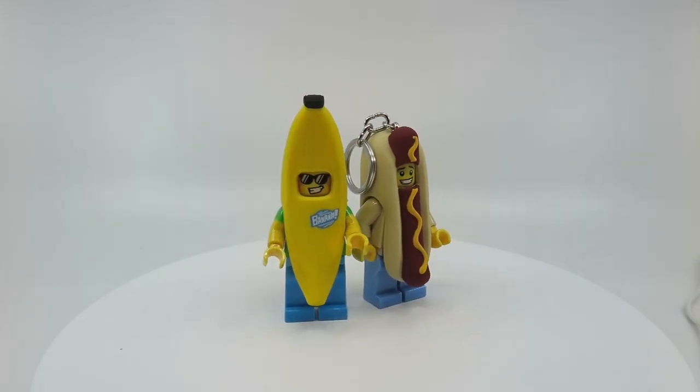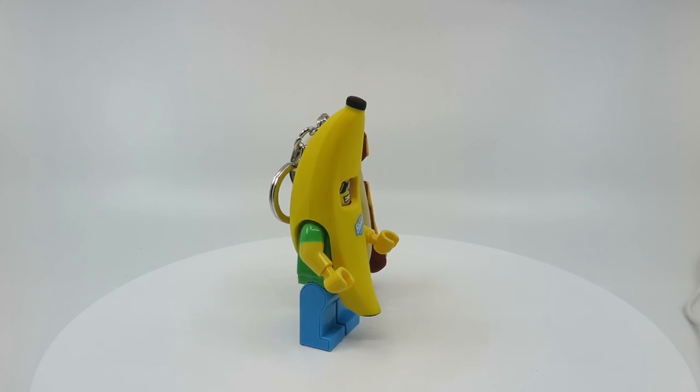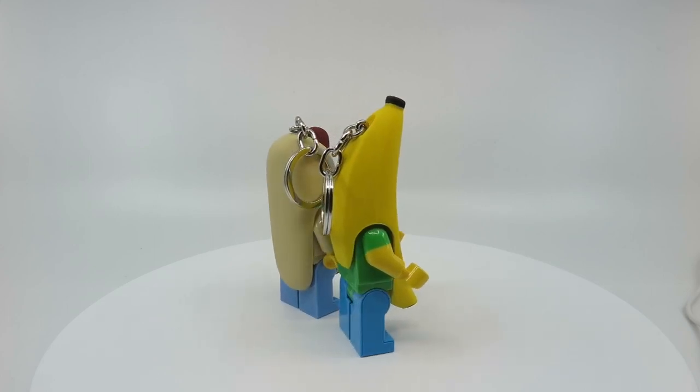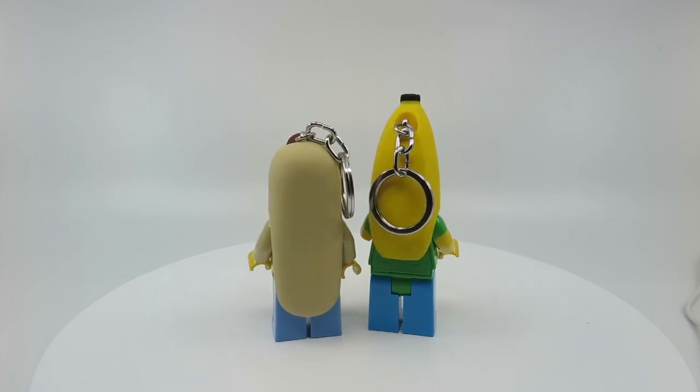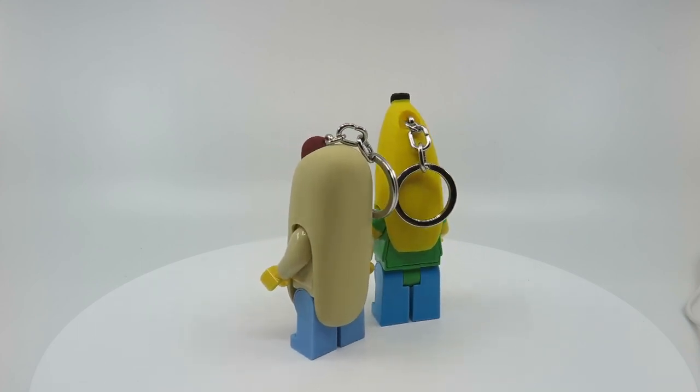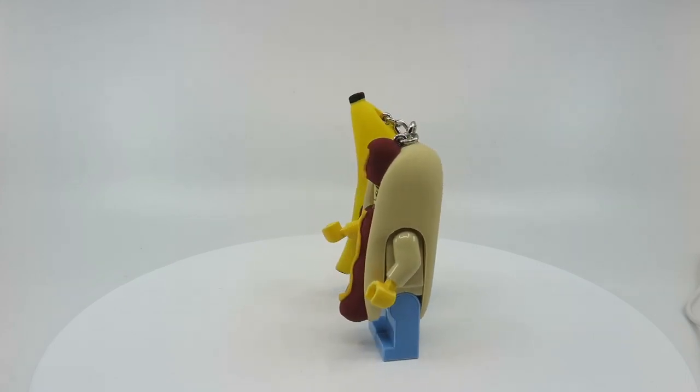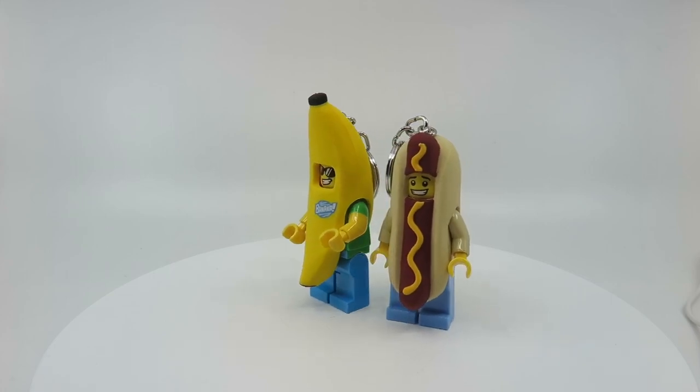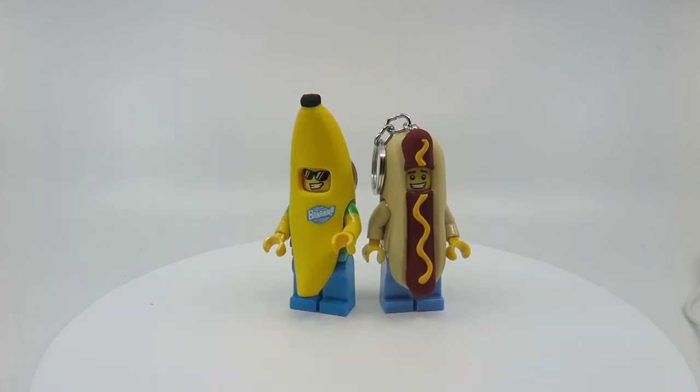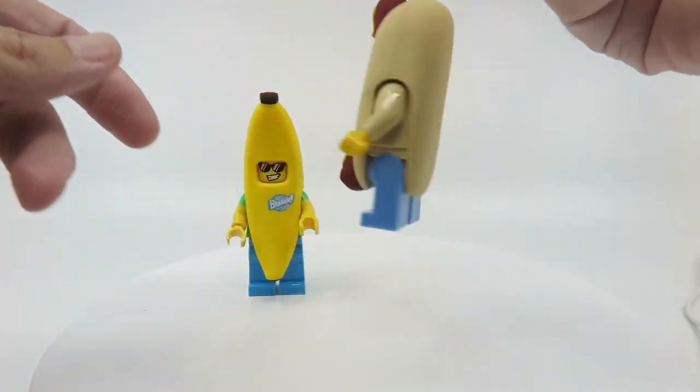Next up, we have two interesting ones that I found while I was at Big W in Brisbane. So these are the standard sort of keychain torches. But what we have here is the hot dog guy and the banana guy. And interestingly enough, the outside section of them, so the hot dog and the banana, are made of a sort of a rubbery material. I'll show you that in a second, just how much flex is in that. But that was quite unusual. So normally they're a full solid thing.